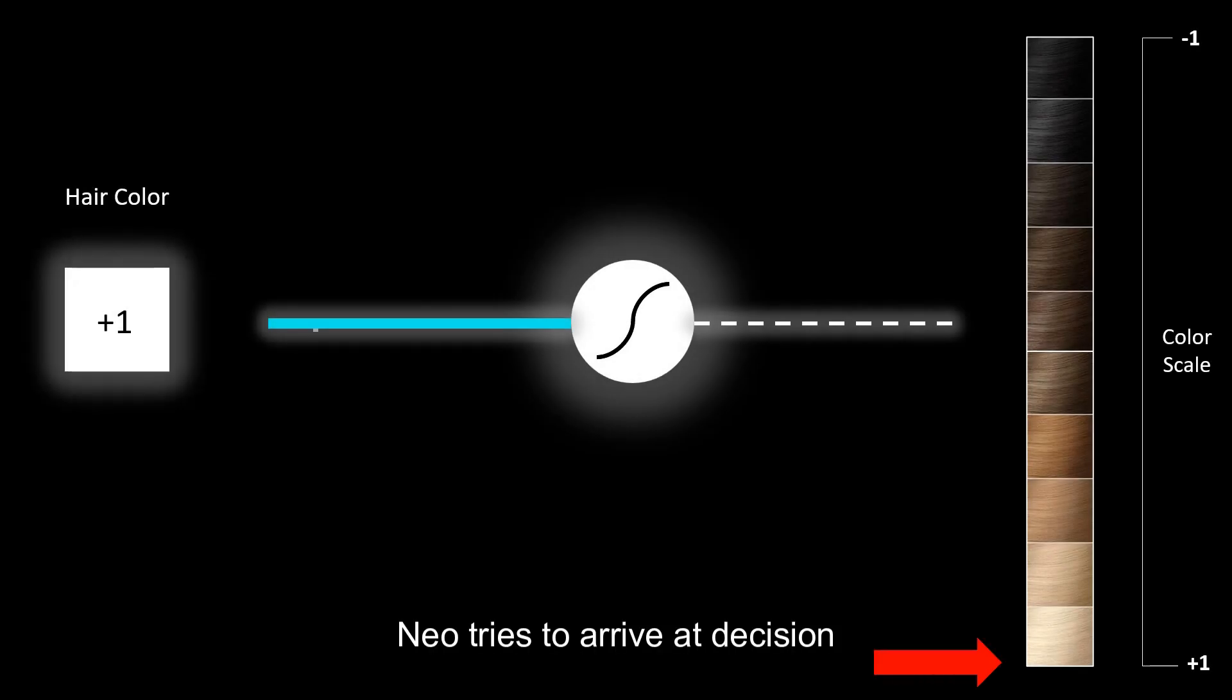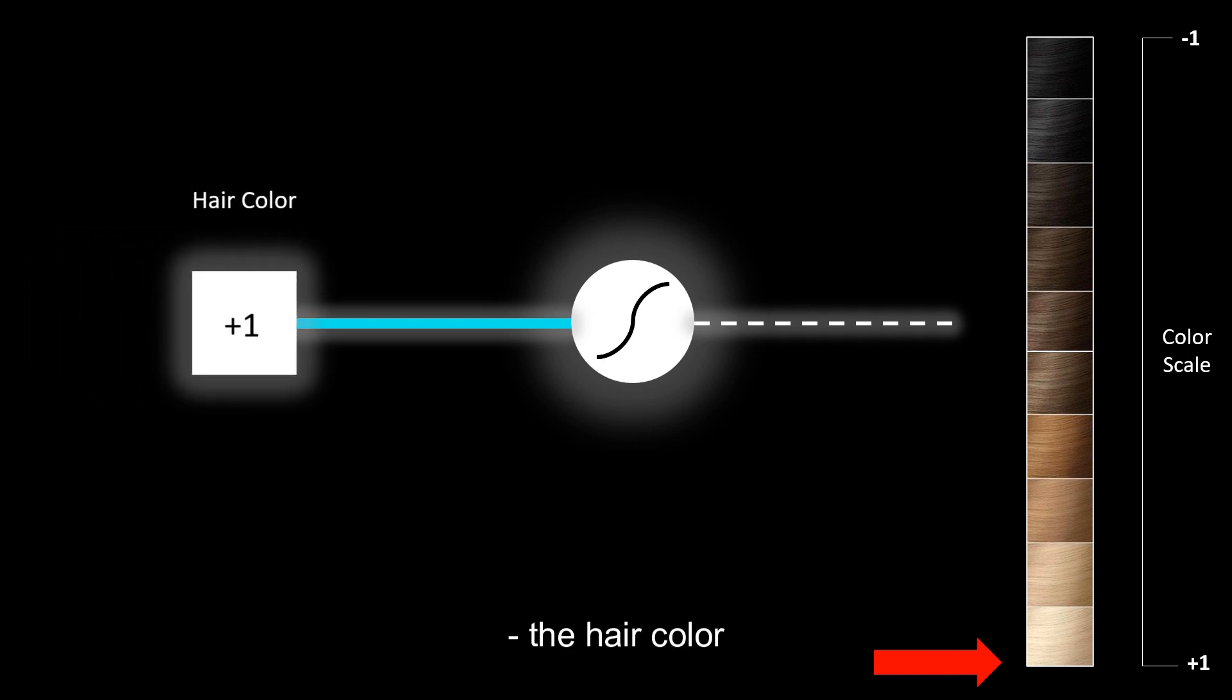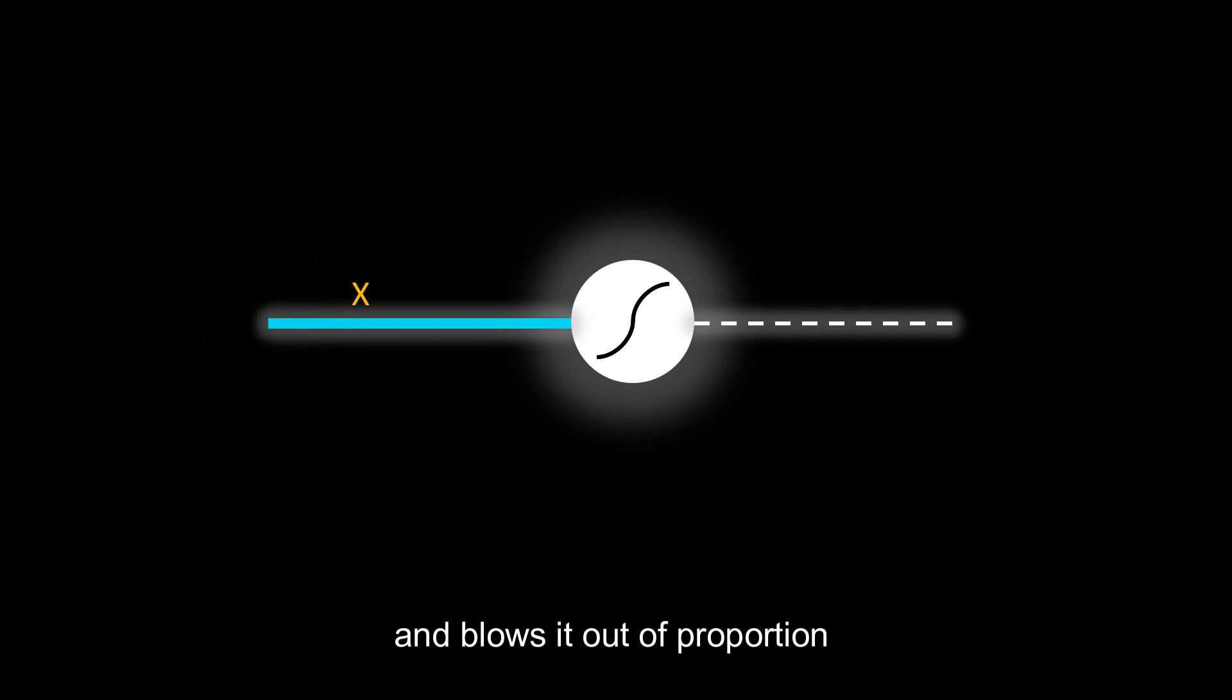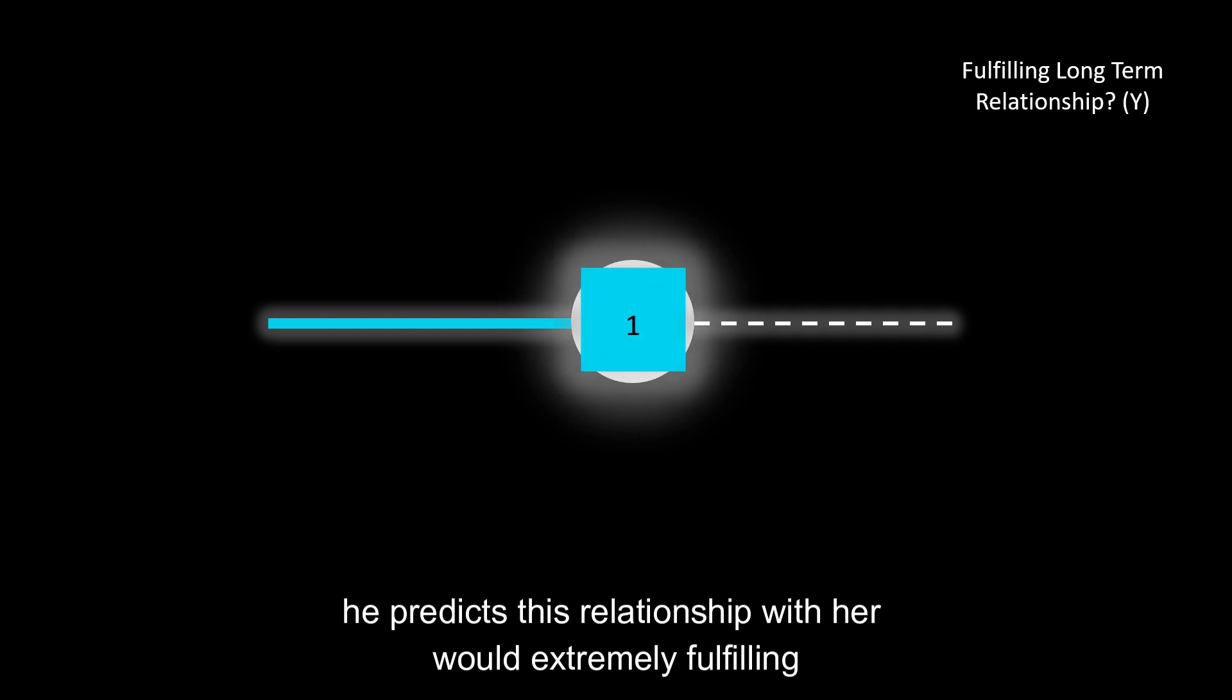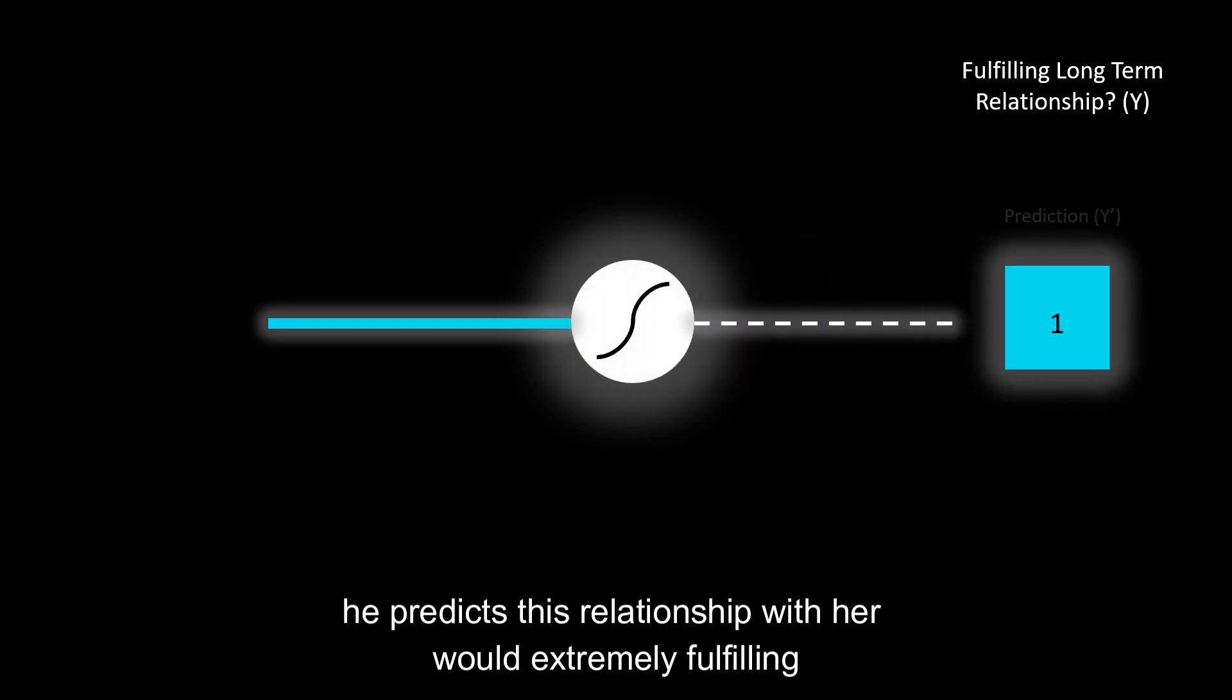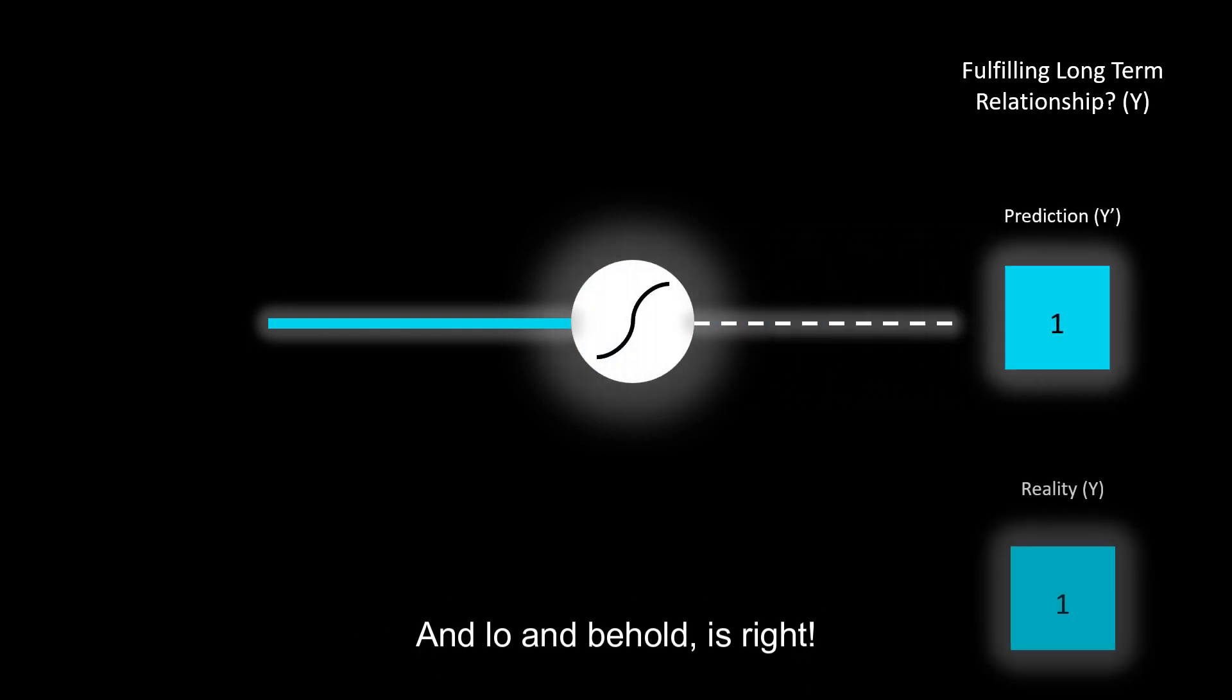Neil tries to arrive at a decision by using the attribute most important to him, the hair color, and he blows it out of proportion by multiplying it with a high weight. After passing this product through a sigmoid function, he predicts this relationship with her would be extremely fulfilling. And lo and behold, he's right for a long time.